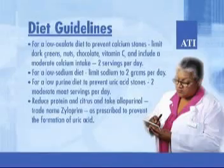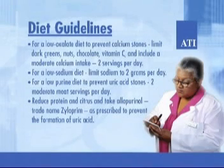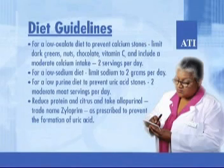For a low oxalate diet to prevent calcium stones, limit dark grains, nuts, chocolate, and vitamin C, and include a moderate calcium intake of 2 servings per day. For a low sodium diet, limit sodium to 2 grams per day. For a low purine diet to prevent uric acid stones, limit to 2 moderate meat servings per day. Also reduce protein and citrus, and take allopurinol (trade name Xyloprim) as prescribed to prevent the formation of uric acid.